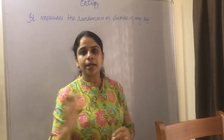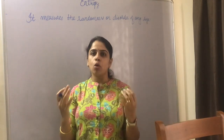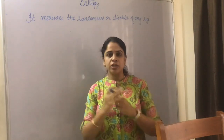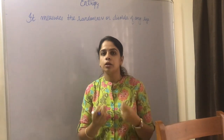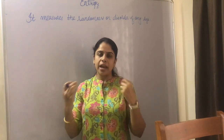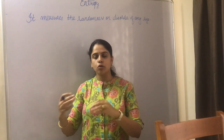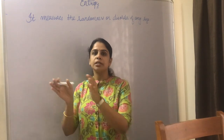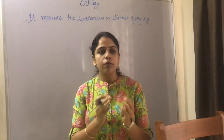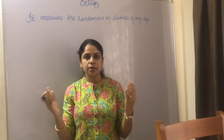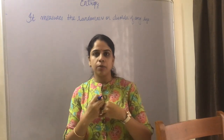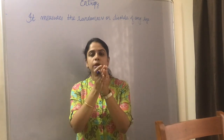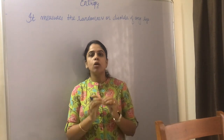To understand the meaning of disorder or randomness, let's consider a system from which we want to obtain maximum work — whether expansion work or compression work. To get the maximum work from any system, the motion of particles or atoms must be in one precise direction. The particles of that system should be arranged in one particular direction, and that is called order.